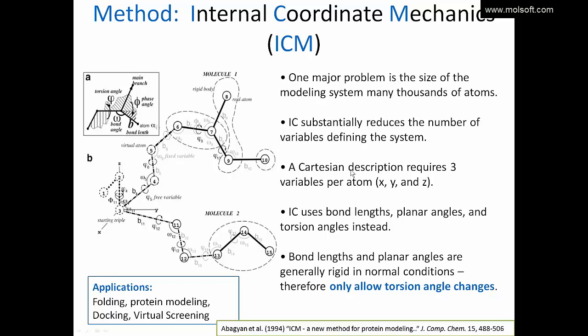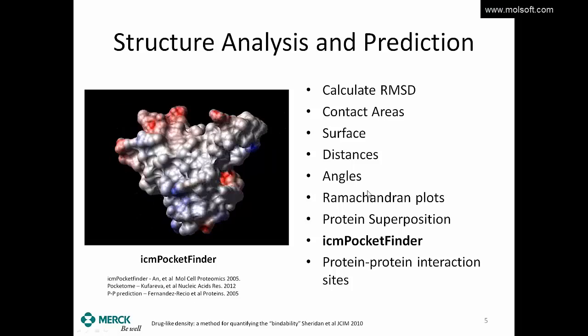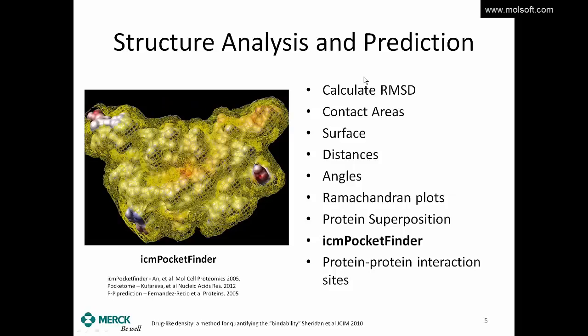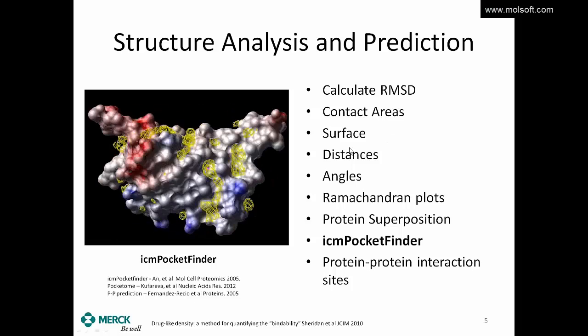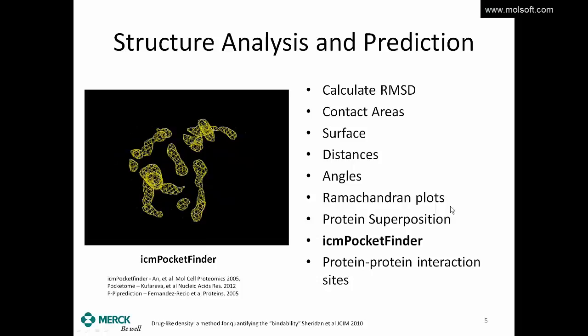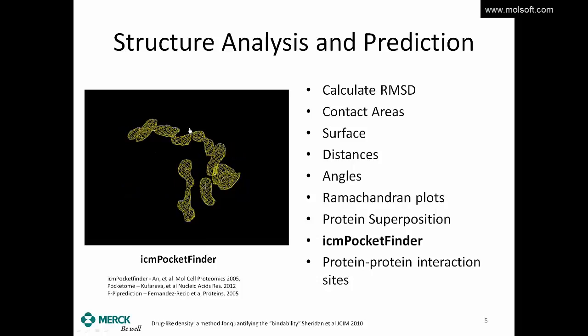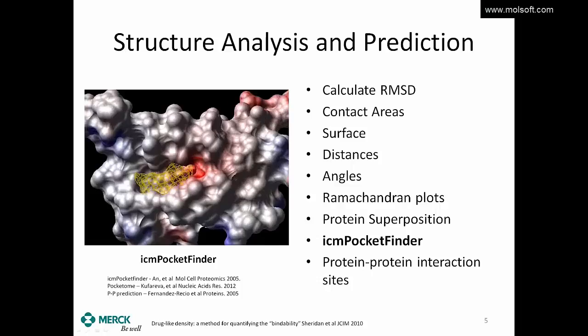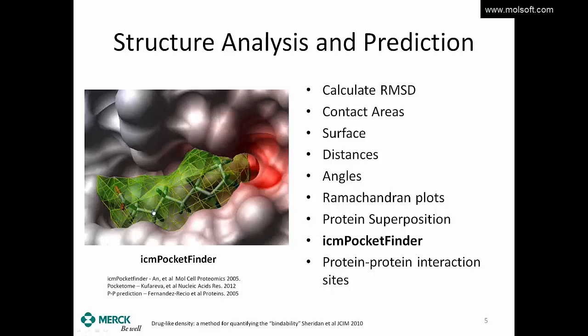Our first example is looking at structure analysis and prediction. We're going to read in a kinase and look at the RMSD difference between the APO and holo form. We're going to look at contact areas, some distances and angles, and we can generate a Ramachandran plot. We'll also look at protein superposition and ICM pocket finder. ICM pocket finder basically takes the protein, rolls a probe across the surface, and contours any cavities found. We find a number of cavities and have a way of eliminating non-drug-like ones based on size.